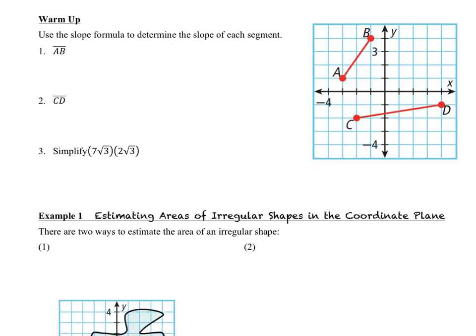Questions 1 and 2 of the warm-up say use the slope formula to determine the slope of each segment. We remember that our slope formula uses the variable m to indicate slope, and it's y2 minus y1 over x2 minus x1. We also think of it as rise over run. So we need the coordinates for our two points, A and B.